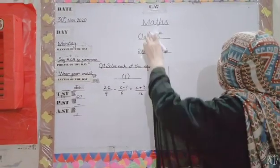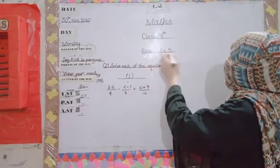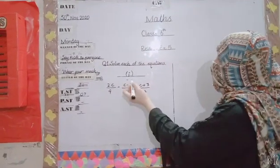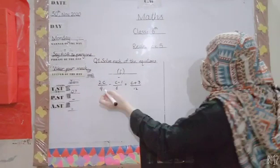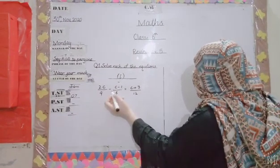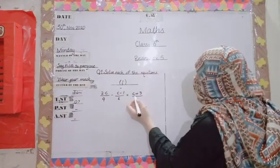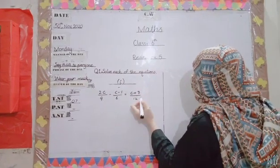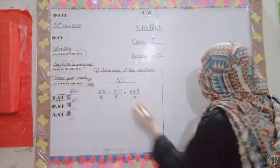Welcome to class 6 maths. We're doing exercise number 5, question number 1. The equation is 2c divided by 9 minus c minus 1 divided by 6 equals c plus 3 divided by 12. We need to find the value of c.